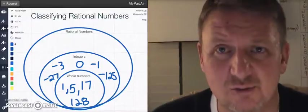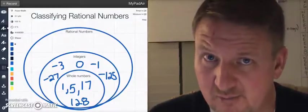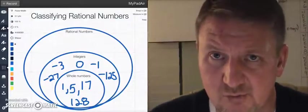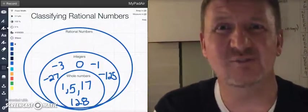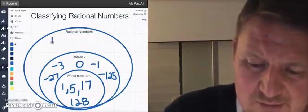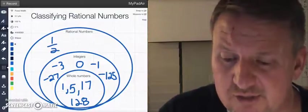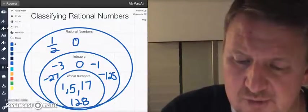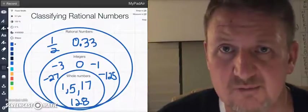So rational numbers includes everything else. It also includes whole numbers and it also includes integers. But rational numbers kind of fills that space in between on the number line. So I'm talking about one half, so it covers fractions. I'm also talking about 0.33, so it covers decimals. These are both to the right of zero on the number line.